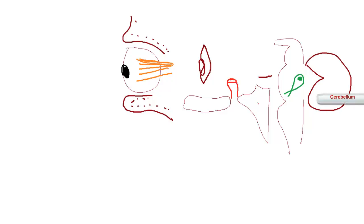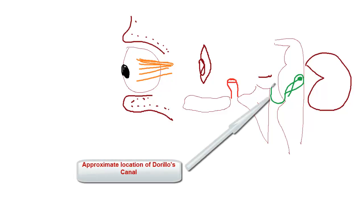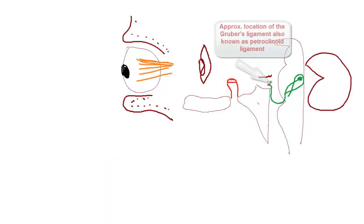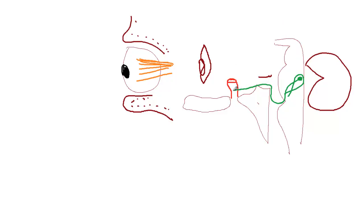The sixth cranial nerve moves anteriorly and inferiorly, leaving the brain stem at the junction of the pons and medulla. It then climbs the clivus bone, at which point it is underneath a sheath of dura mater called Dorello's canal. It then pierces the dura just medial to the Gruber's ligament, enters the cavernous sinus, and travels lateral to the internal carotid artery before passing through the superior orbital fissure.